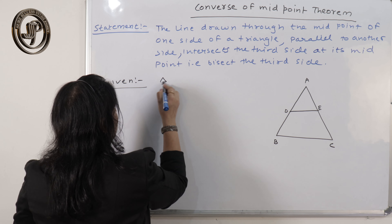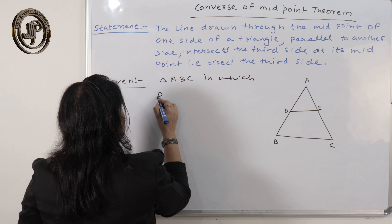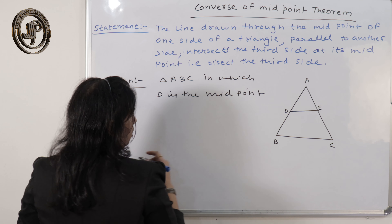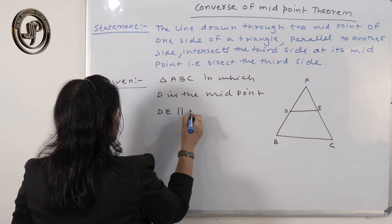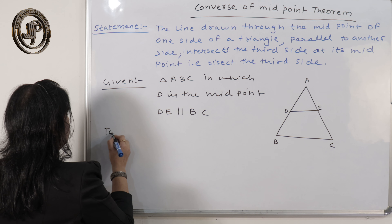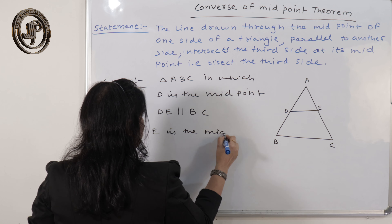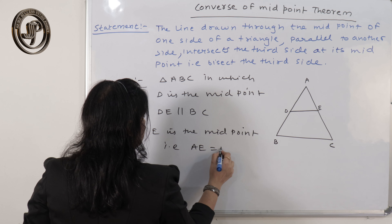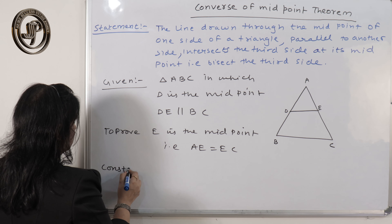What is given here: triangle ABC in which D is the only midpoint — just one midpoint is given. The second point E is what we need to prove is the midpoint. Also given: DE is parallel to BC. We need to prove that AE equals EC.